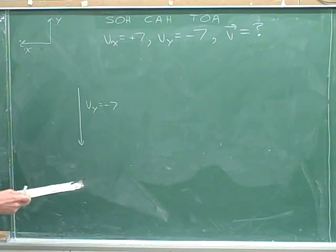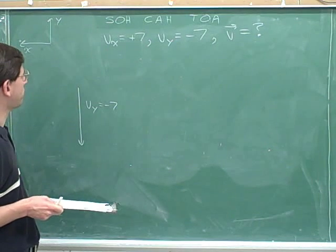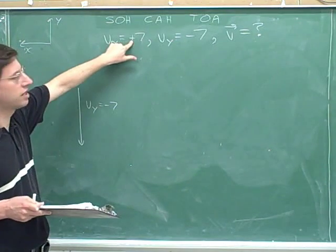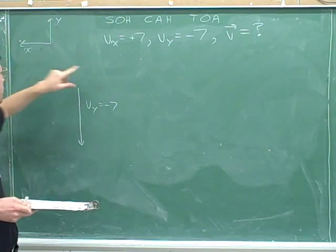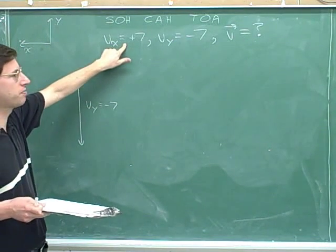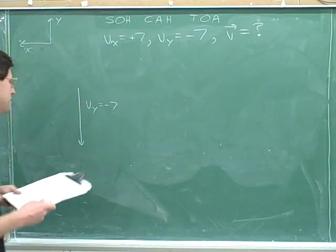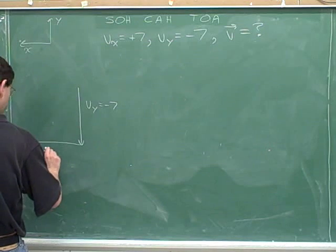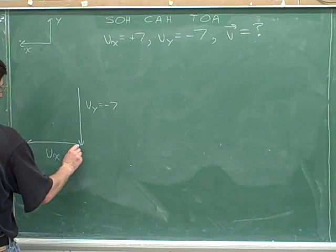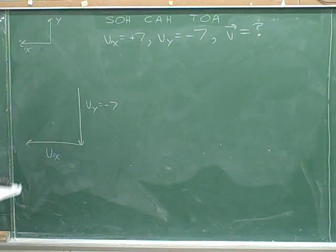Now we need the x component. Which direction should the x component be pointing in? Well, it's pointing in the positive direction, which is to the left. Left is positive, the x component is positive, so the x component is left. And the x component should begin where the y component left off. This component begins where the initial component left off.